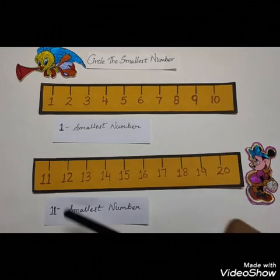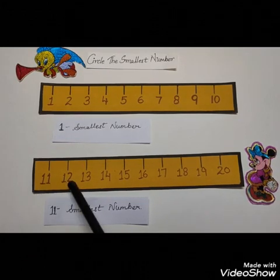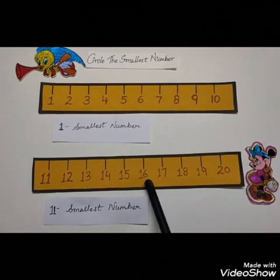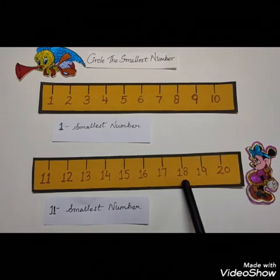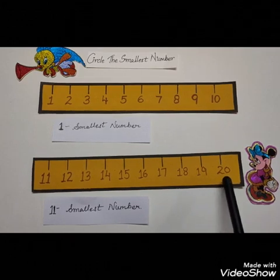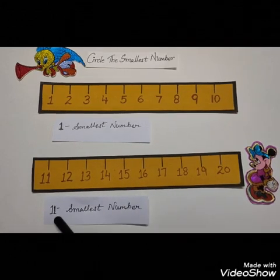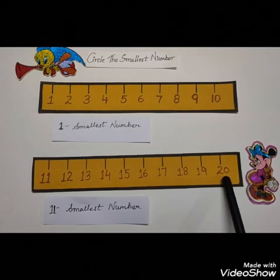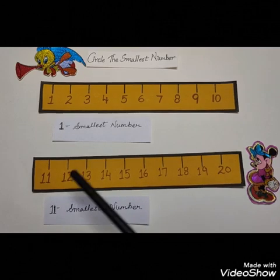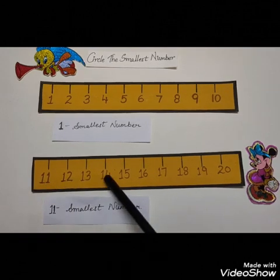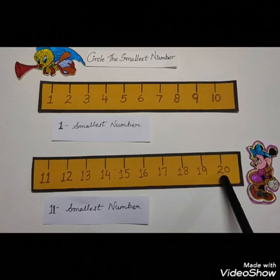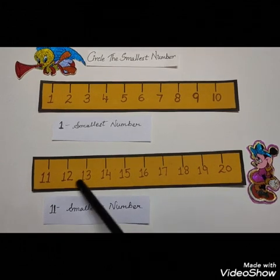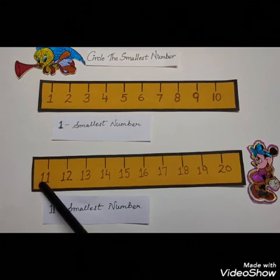We can also see as we count further from 11 to 20. Count with me: 11, 12, 13, 14, 15, 16, 17, 18, 19, 20. So 11 becomes the smallest number and 20 becomes the biggest number. Understood children? As the number counts further, the number becomes bigger, and as we count backwardly, the numbers become smaller.